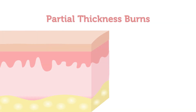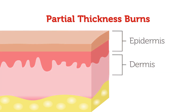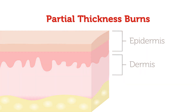The second type of burn is called a partial thickness burn. This type of burn affects two layers of skin, the epidermis and the dermis. The dermis sits beneath the epidermis and contains tough connective tissue, hair follicles, and sweat glands.